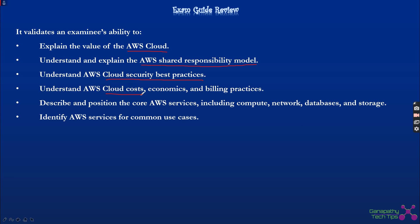Fourth is understanding AWS cloud cost economics and billing practices. AWS uses a pay-as-you-go pricing model. You need to understand how costs are billed, expected costs, and there is an AWS billing calculator available online to calculate your costs. Fifth is describing core AWS services including compute, networking, database, and storage.